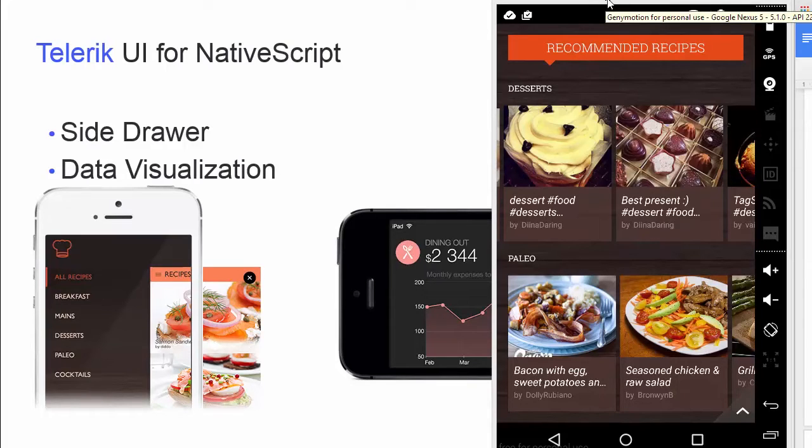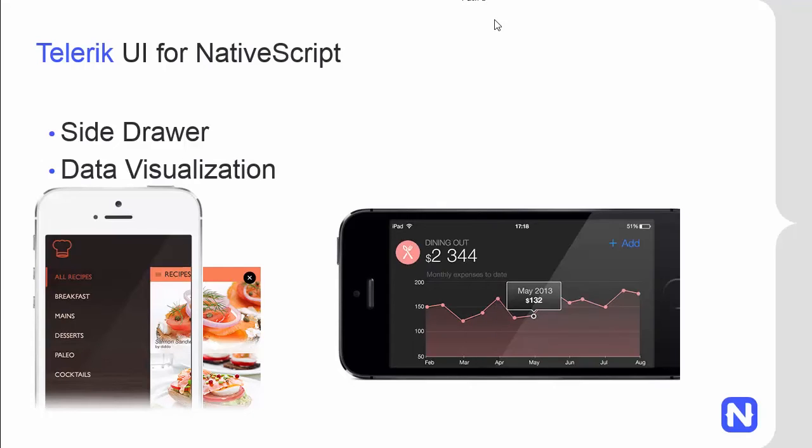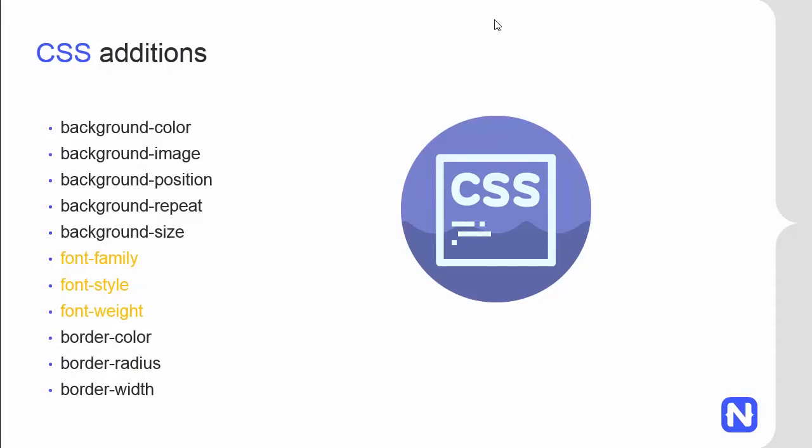Now let's get back to the other user experience improvements in the 1.2 release. First, we added several new CSS properties — mostly background CSS properties, font properties, and border properties. These were all requested by many people from the community and are core CSS functionality that should be part of NativeScript. If you want to see more CSS additions, please open an issue on GitHub and we will evaluate it.